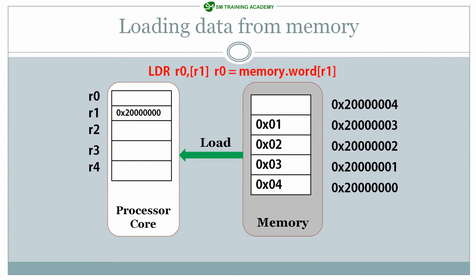Since our processor is a little-endian based architecture, the data will be written in this format: the data written into R0 will be 0x01020304. Starting from address 0x20000000, data will be written in reverse manner — the LSB will be written at the LSB part and MSB at the MSB part in little-endian format. In big-endian format the case is reversed, and the data written would be 0x04030201. This is how loading data from memory happens in the processor.